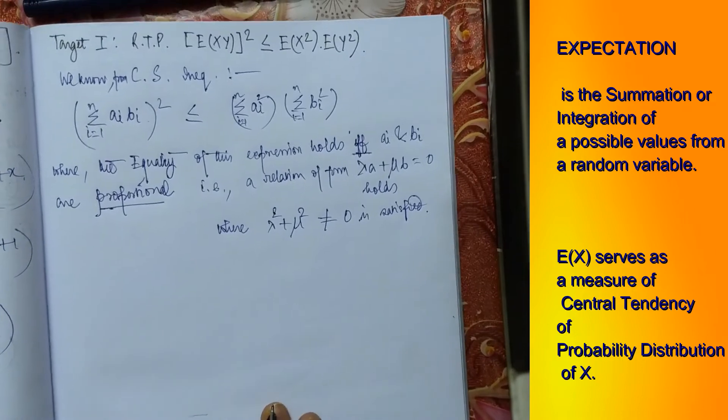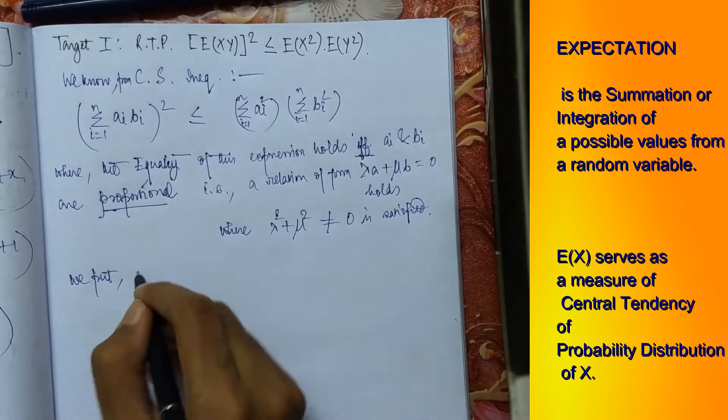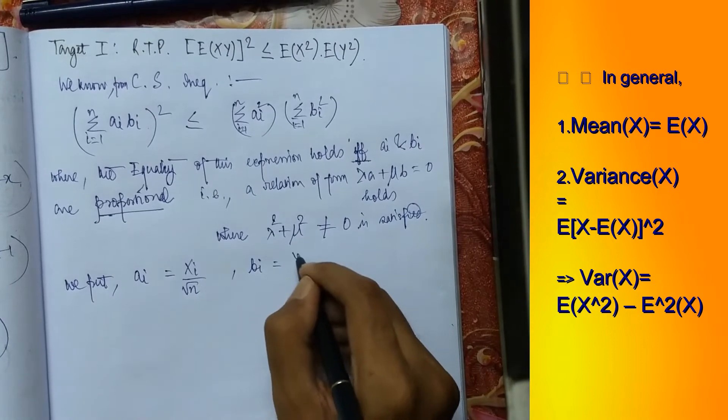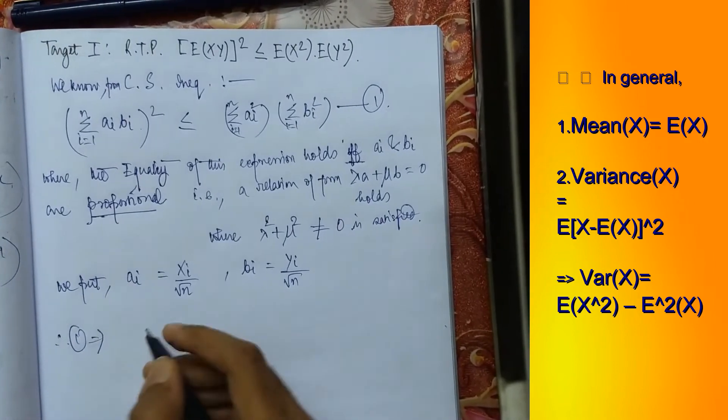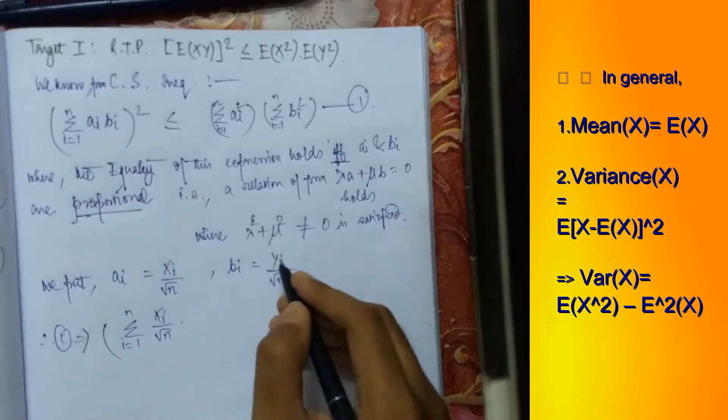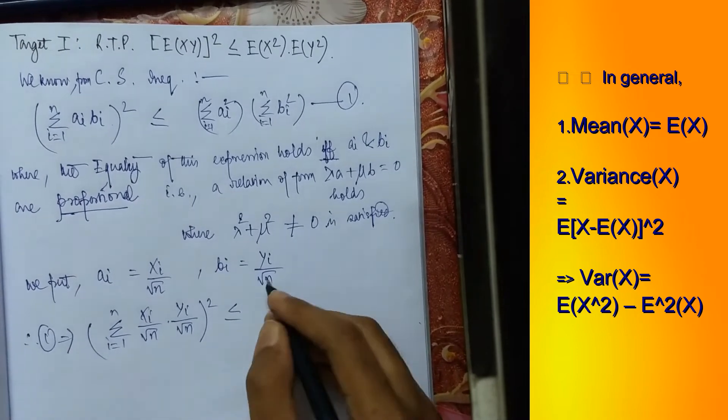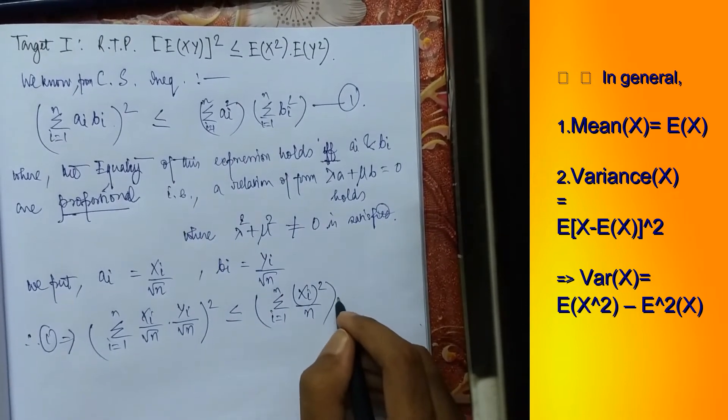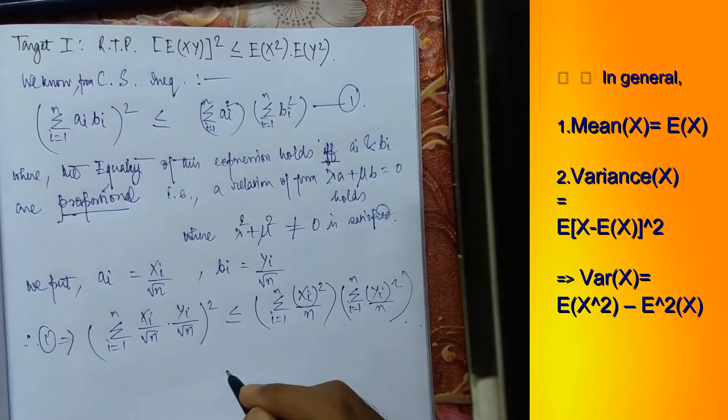Now here we need to remember that we have to put here two substitutions which are quite plain and simple. We put ai equals to xi by root n and bi equals to yi by root n. Let us name this equation as 1. Therefore 1 implies in place of ai we put xi by root n, in place of bi we put yi by root n whole square which is less than equals summation i 1 to n ai square which means xi square by n into i equals to 1 to n yi square by n. Done.